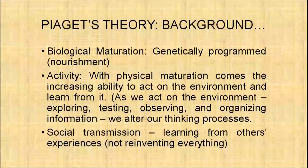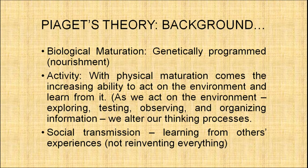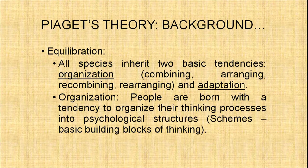The third factor is social transmission, in which a child learns from others' experiences. For example, if a child sees that people do not step down from a moving bus, they learn not to do so either. Because of social transmission, we need not reinvent everything. The fourth factor is equilibration, one of the most important parts of Piaget's theory. Before discussing it, let us understand some related concepts.